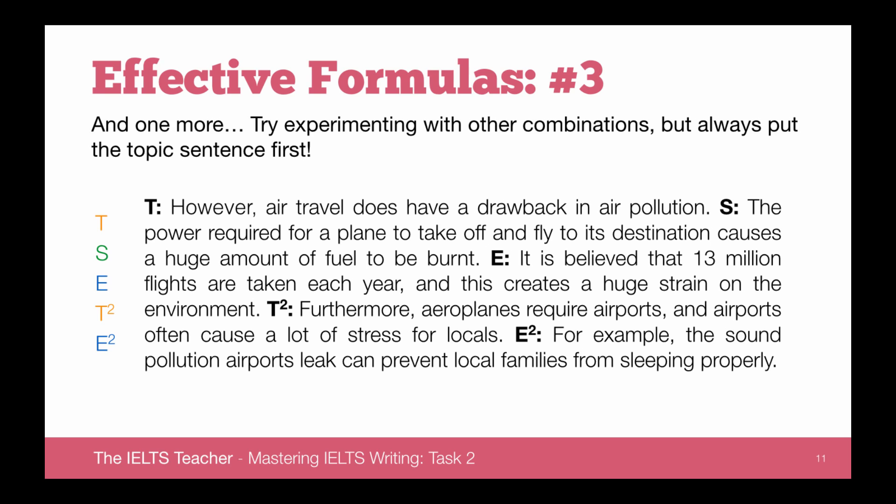We follow that with another topic sentence which links back to the first one — we're talking about drawbacks and here is another drawback: 'Furthermore, aeroplanes require airports and airports often cause a lot of stress for locals.' Then an example: 'For example, the sound pollution airports leak can prevent local families from sleeping properly.' So using a mixture of supporting sentences, example sentences, result sentences, and alternative sentences after the original topic sentence creates a very well-developed, well-supported, extended, relevant paragraph for task two.